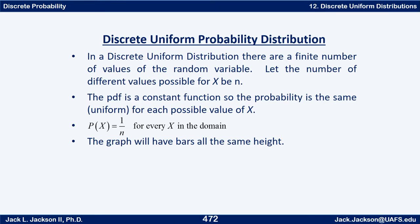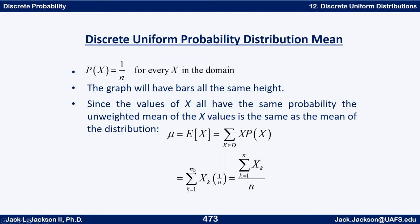So P(x) is 1/n for every x that actually has a nonzero probability. That means in the graph the bars will all have the same height. Since all of the x values have the same probability, the unweighted mean of the x values is the same as the mean of the distribution.